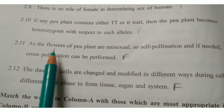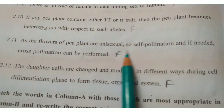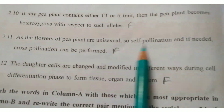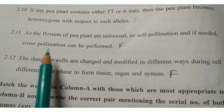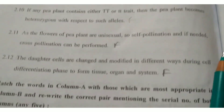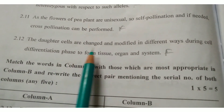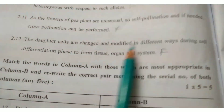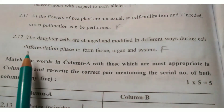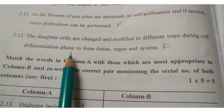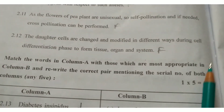Question 2.11: As the flowers of pea plant are unisexual, so self-pollination and, if needed, cross-pollination can be performed. Write answer: False. Question 2.12: The daughter cells are changed and modified in different ways during a cell differentiation phase to form tissue, organ, and system. Write answer: False.